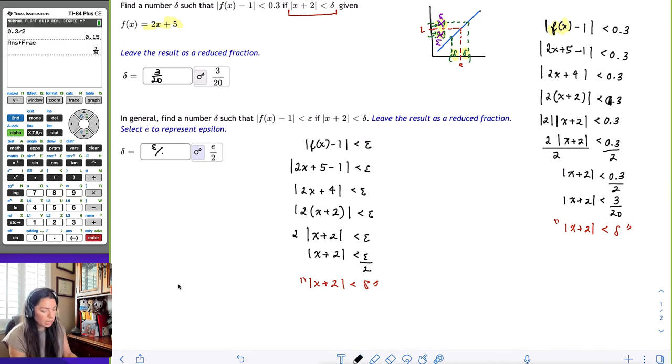This means that if I want to be within an epsilon of L, I have to be within an epsilon over 2 distance within A if my function was 2x plus 5. All right, I hope this helps.